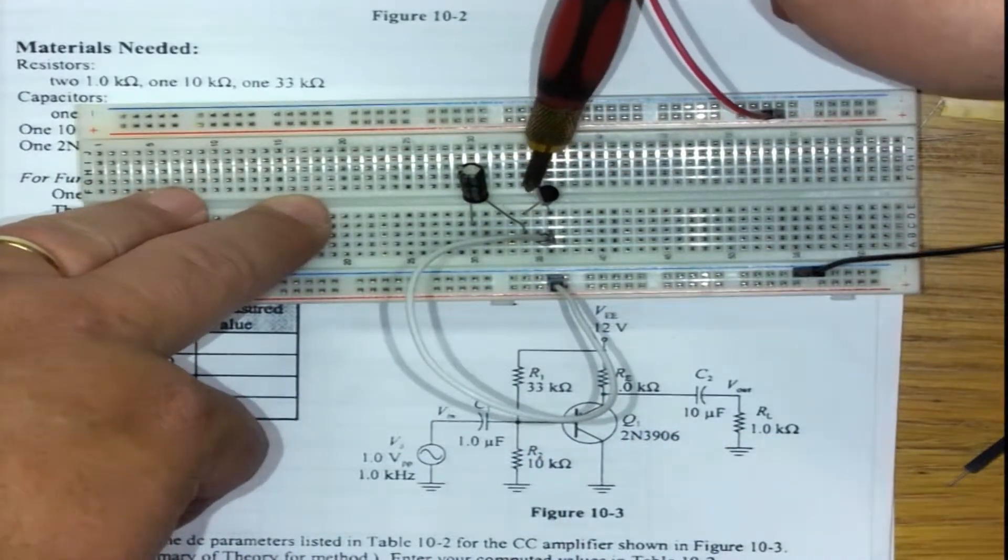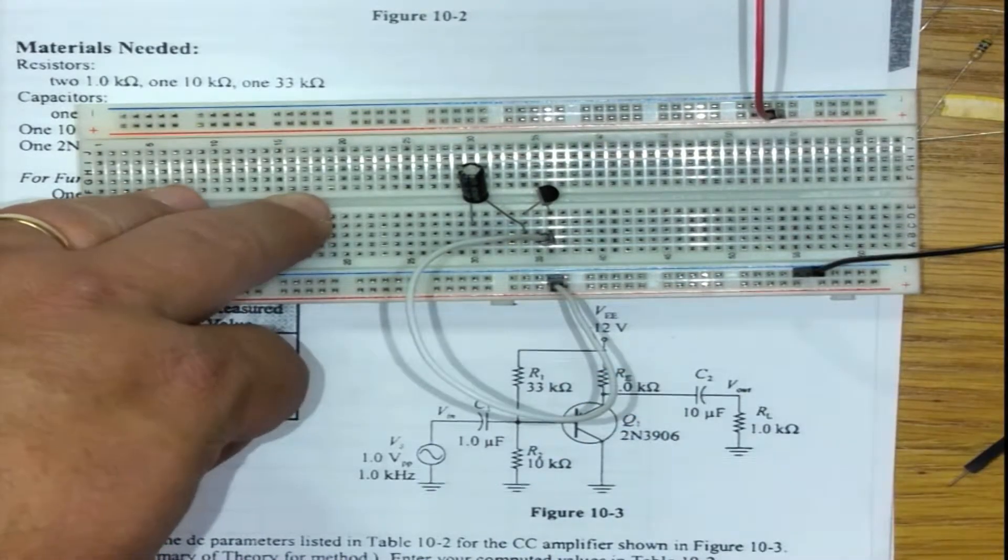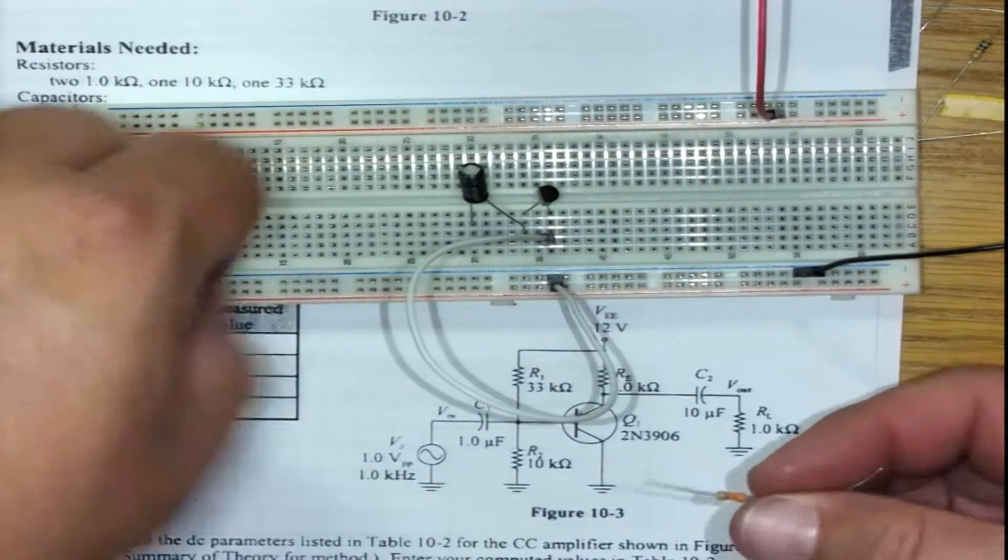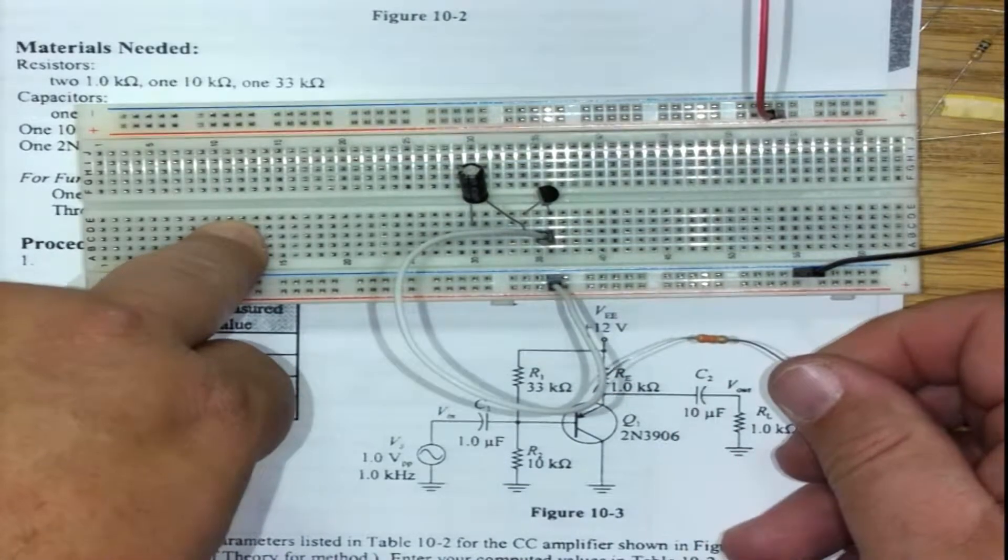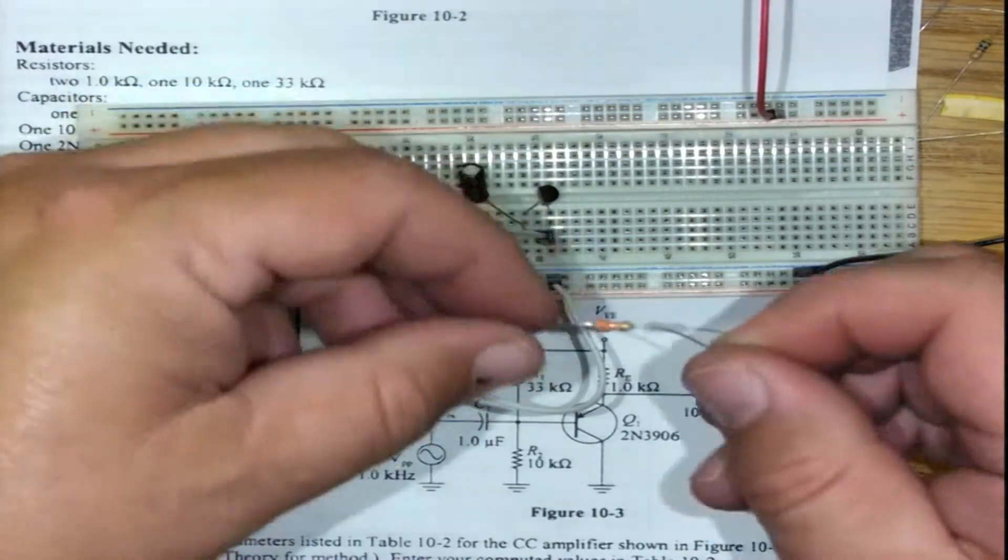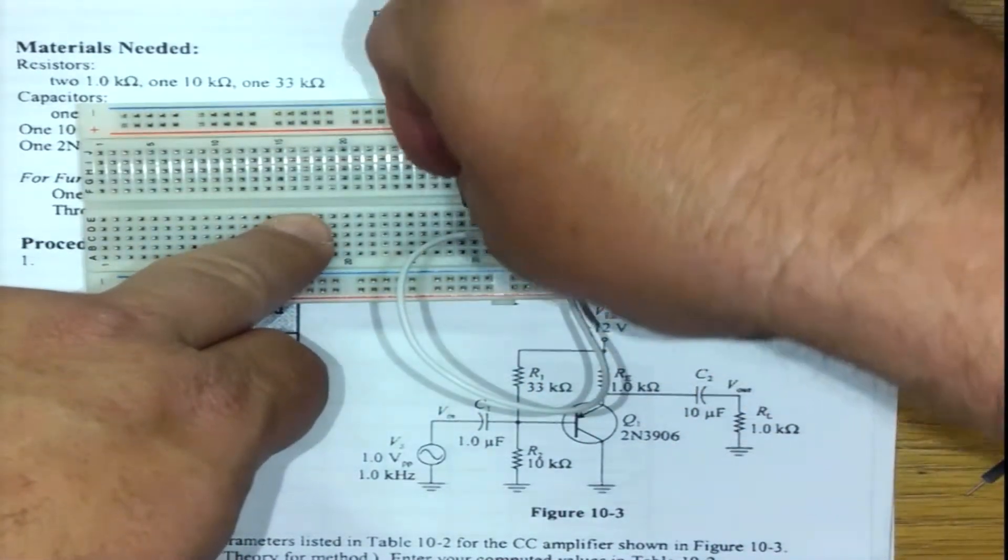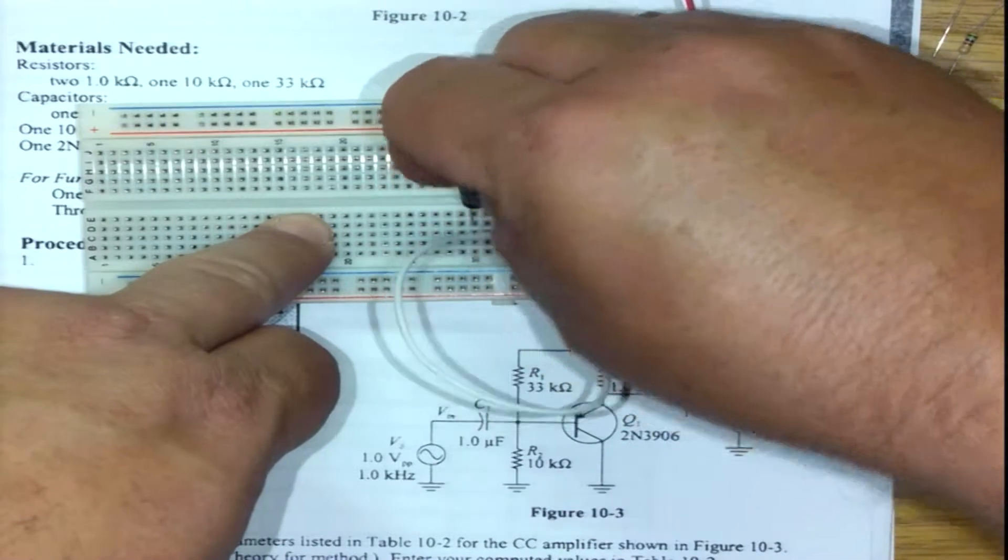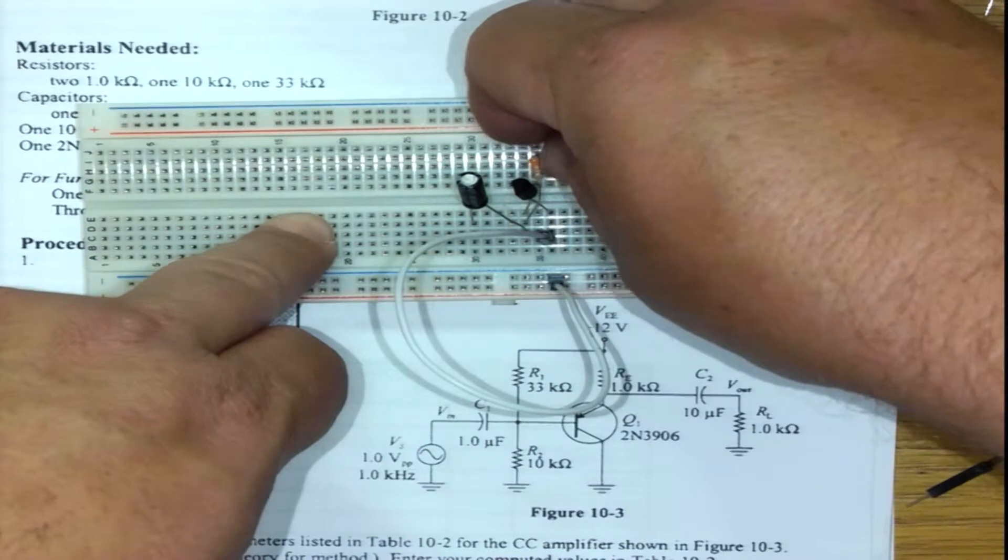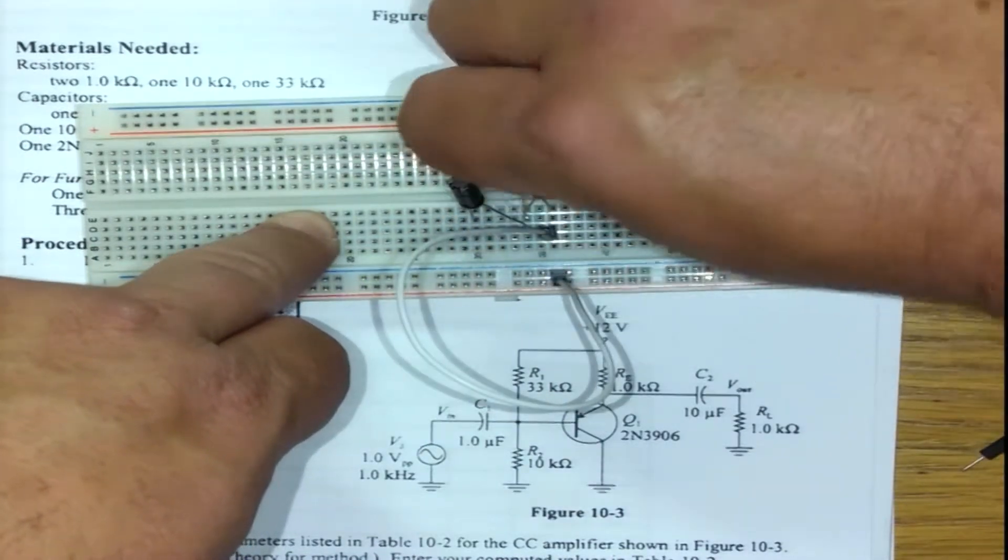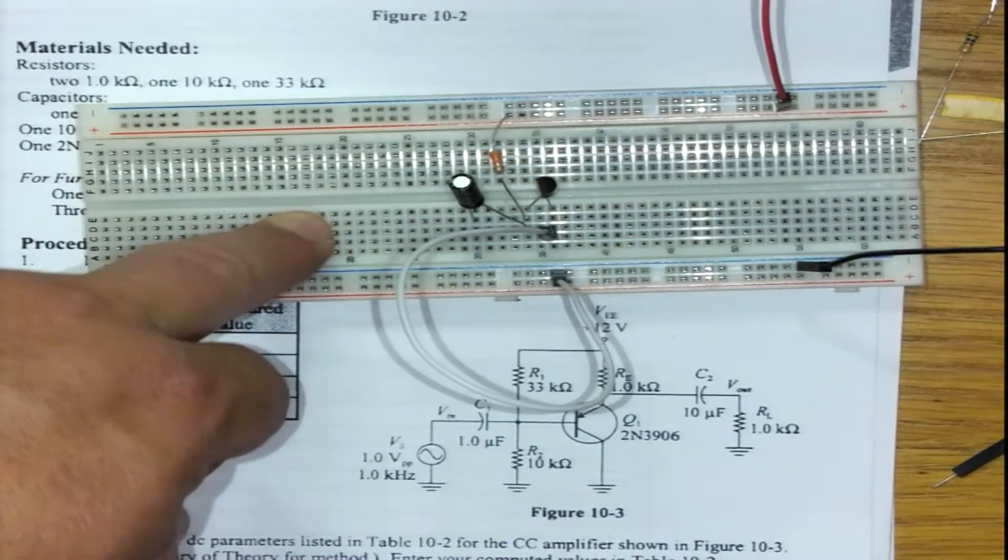On this side is the base, and on top is the emitter. I can take the 33 kilohm resistor—the color coding is orange orange orange—and connect that from the base, which is down there, all the way to the positive.